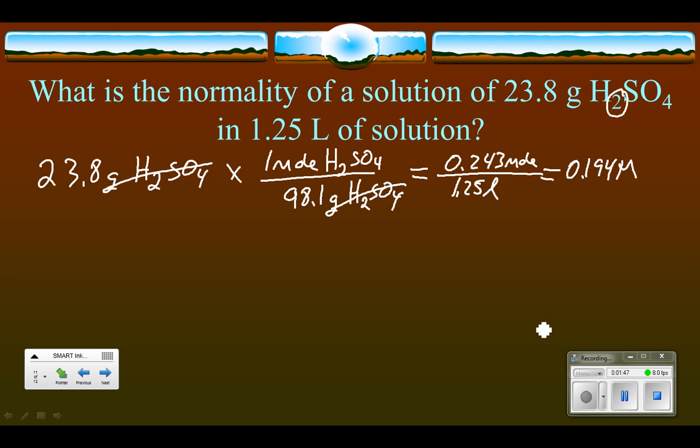And so we just take the molarity and multiply it by two hydrogens. And so when we take 0.194 times 2, we get a normality of 0.388. That point's not showing up. And the unit on that is a capital N.